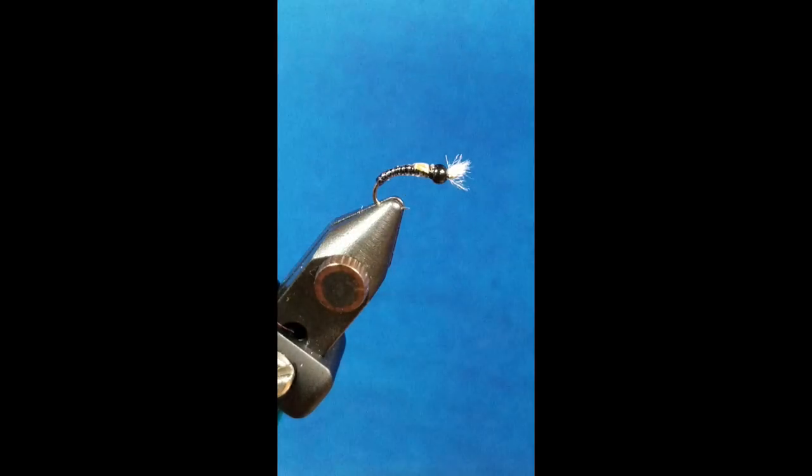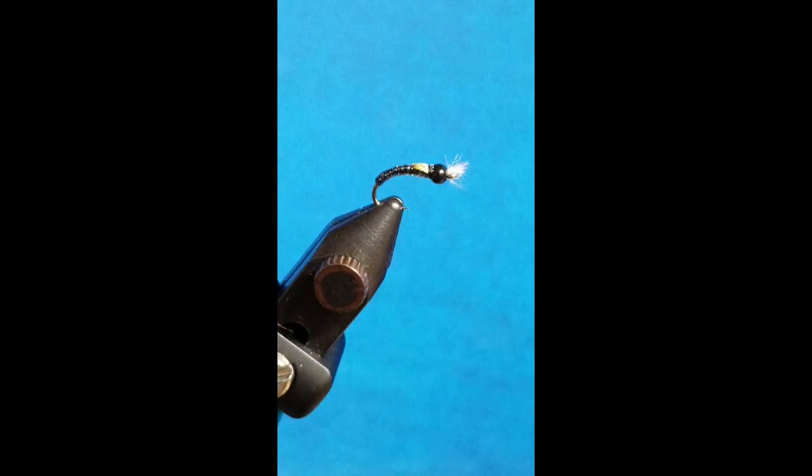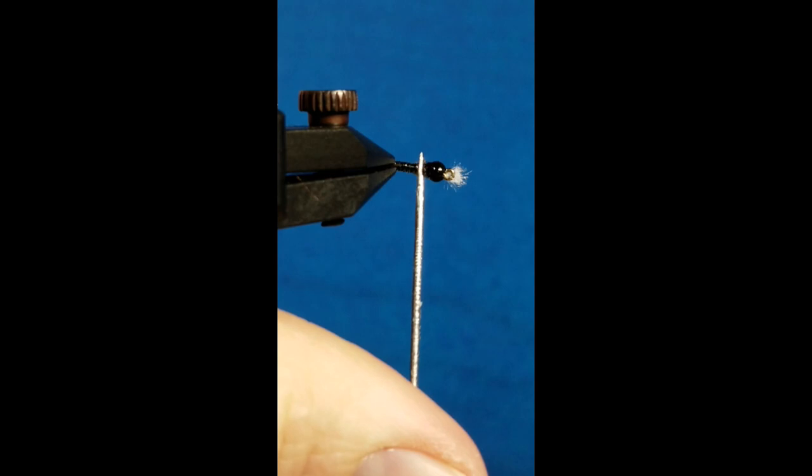I'm a huge proponent of durability, so I'm going to put in a little drop of Zap-A-Gap on the bottom side. That's not going to get the UV, just to cover up my thread wraps there.